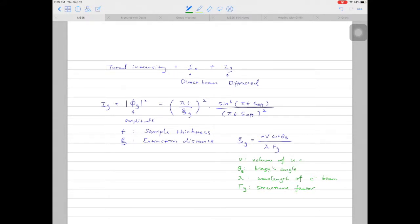For a given material, and if we examine the given material in a regular TEM, we know the volume of the unit cell, we know the structure factor of the given material, we also know the wavelength of the electron beam from the TEM. So ccg now is only a function of theta b, the Bragg's angle.